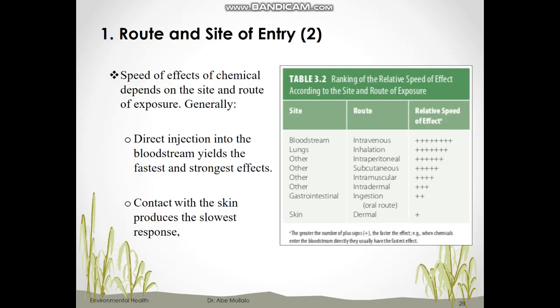The speed of effect of chemicals — whether they quickly or slowly impact your body — depends on the route of exposure. Direct injection into the bloodstream or veins has the fastest and strongest effect, followed by inhaling contaminated air. The lowest speed of effect is through the skin because the skin acts as a protective barrier and the effect is local.